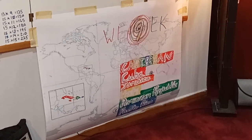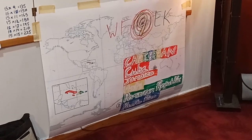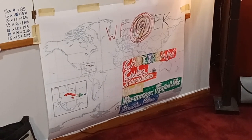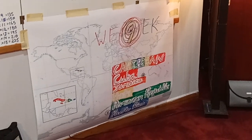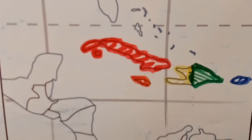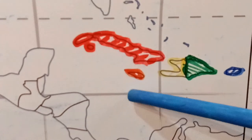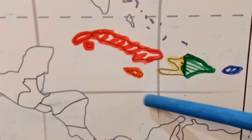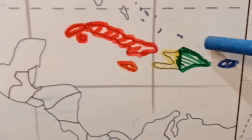Let the Force be with us for Week 9's Geography. We're going to be in the Caribbean. We're looking at Cuba, Jamaica, Haiti, Dominican Republic, and Puerto Rico. Today, for Week 9, we have the Caribbean. In between North America and South America, we have Cuba, Jamaica, Haiti, Dominican Republic, and Puerto Rico.